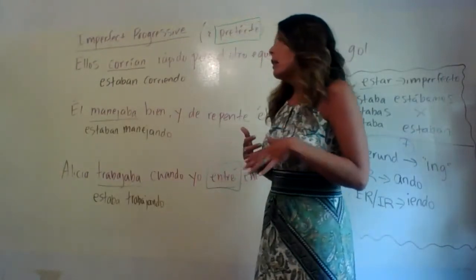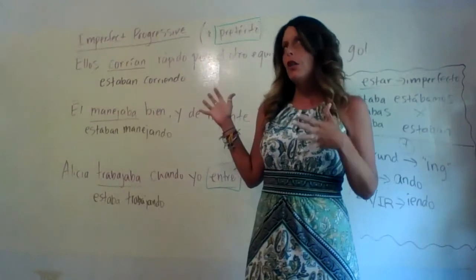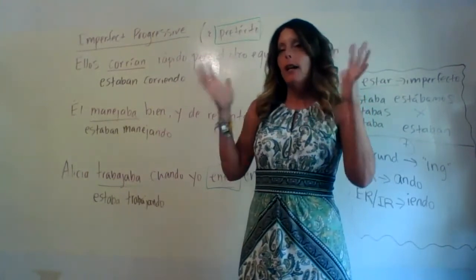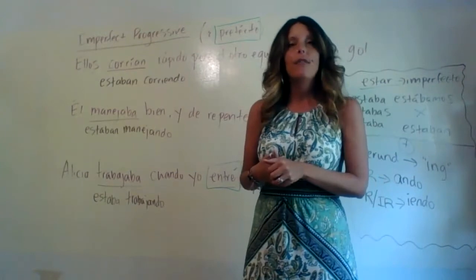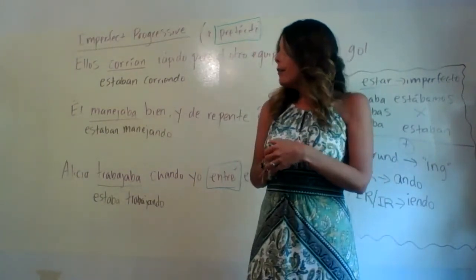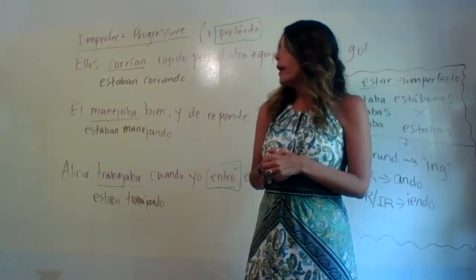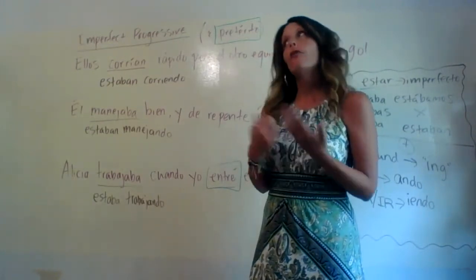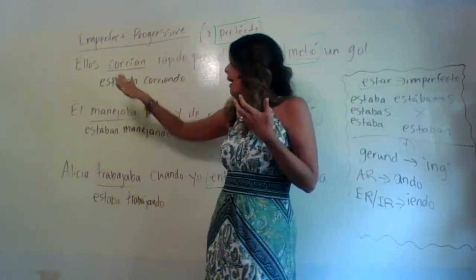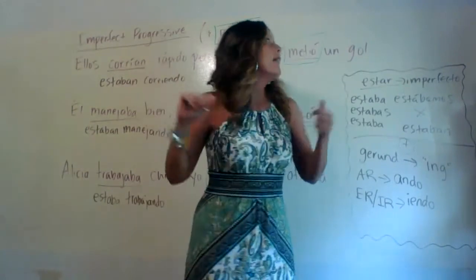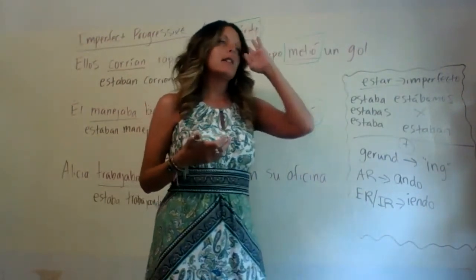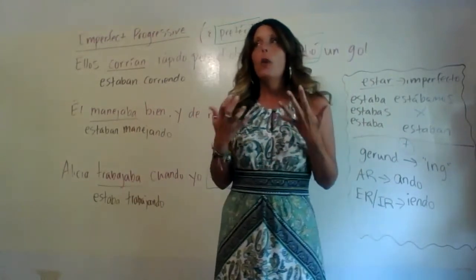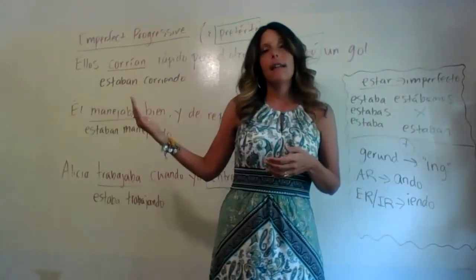Let's go step by step. We have the imperfect and the preterite — you can go back and look at those videos — and now we have the imperfect progressive. When the imperfect like corrían appears with the preterite like metió in the same sentence, the imperfect generally comes in the front part of the sentence because it's giving a description of what was happening or setting the scene.